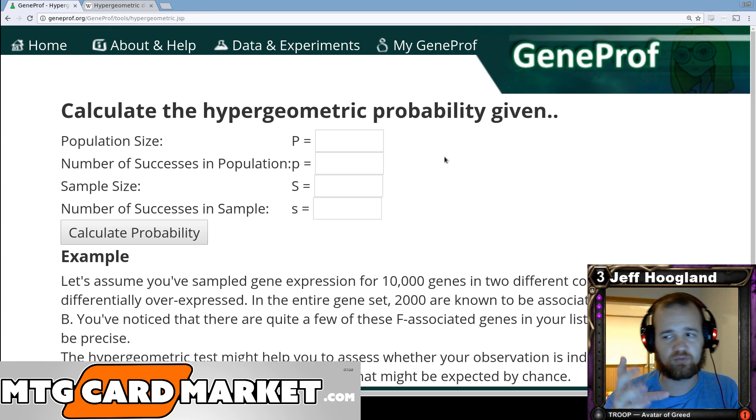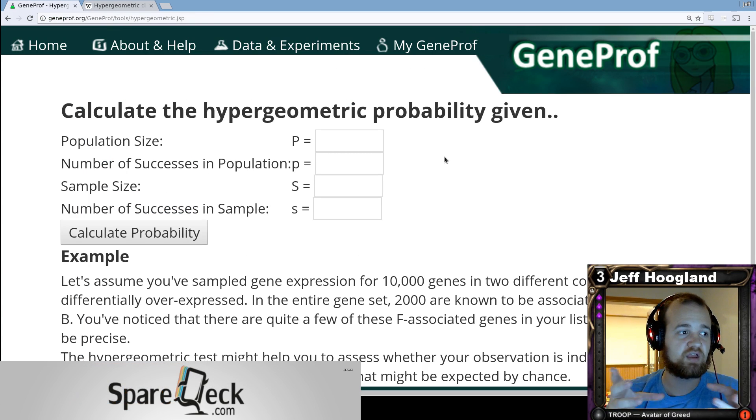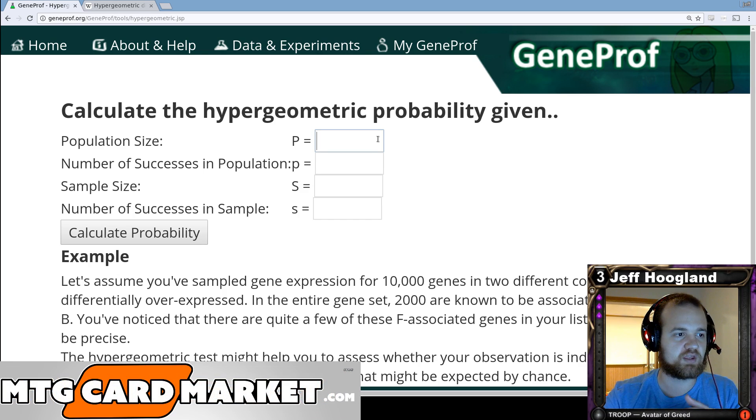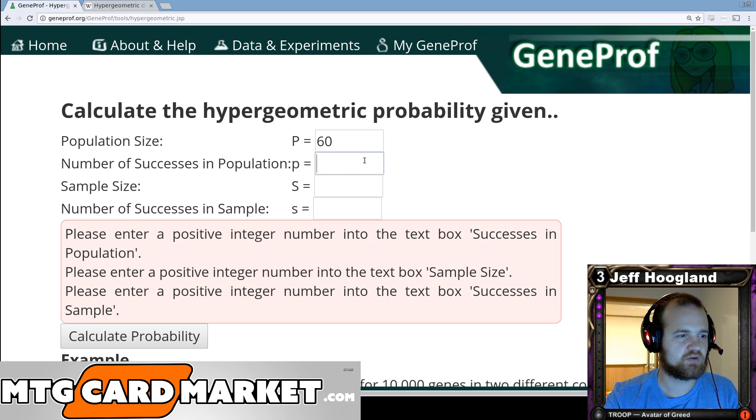The base of what we're going to be working with today is using a hypergeometric probability calculator. And the main thing you need to understand in order to use this is that there's four different inputs that we use in the calculator. So the first thing, the population size, that's how big your deck is, how big the thing is that you're drawing cards out of. So in Magic and Hex, that's 60 card decks, generally speaking, or a little bit bigger.